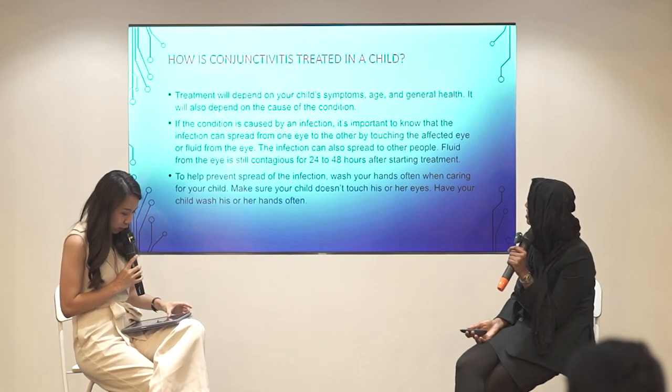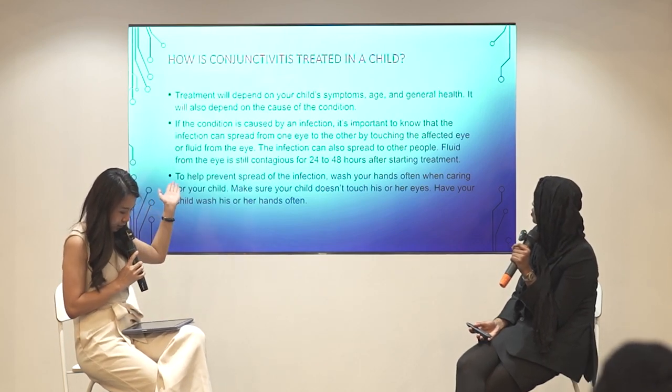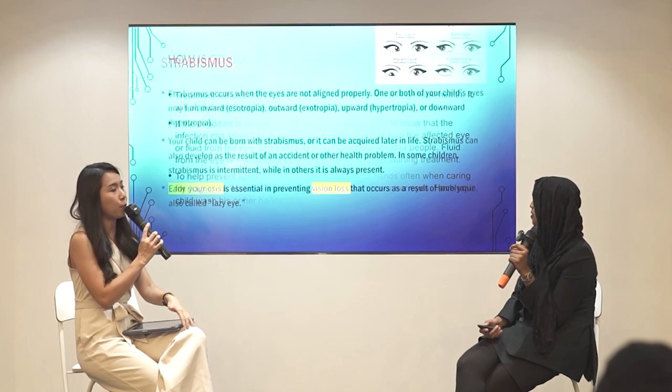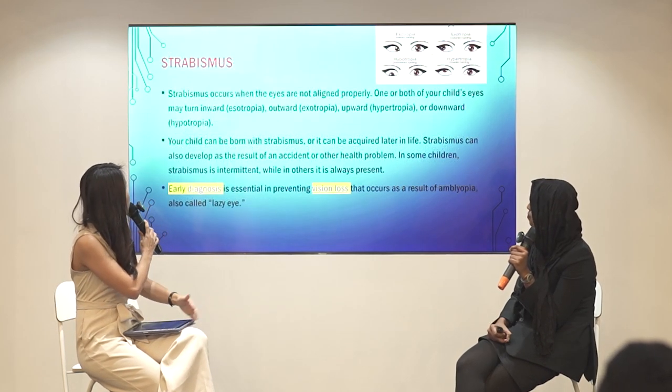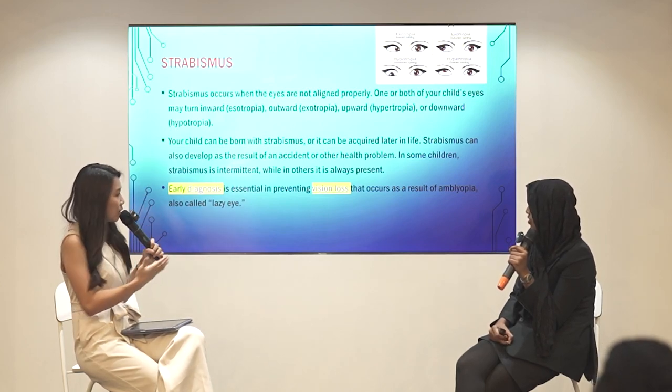Taking good hygiene is very important to prevent conjunctivitis. Parents should take good care of their children and ask them to wash their hands frequently and properly. Moving on, let's talk about the next common eye problem, which is strabismus.